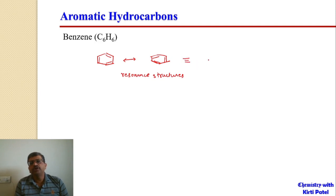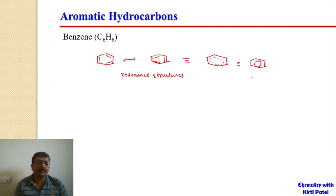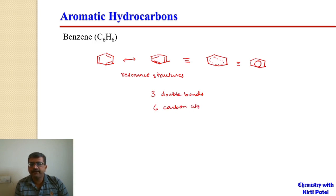The overall structure has a six-membered ring like cyclohexane but with double bonds moving in between. We can represent it as a simple ring with a circle inside, representing the overall resonated structure of double bonds in the benzene ring. Benzene has three double bonds, six carbon atoms, and is the simplest of aromatic compounds.